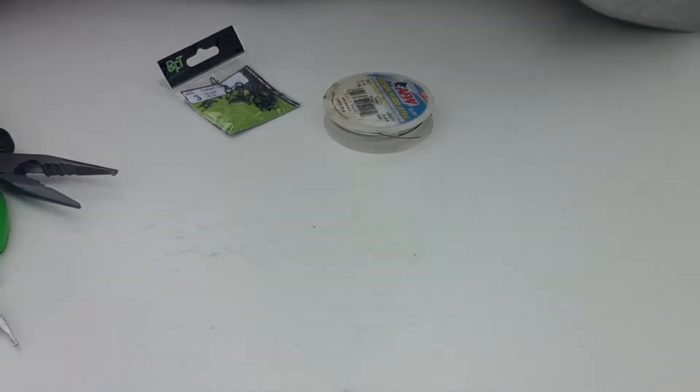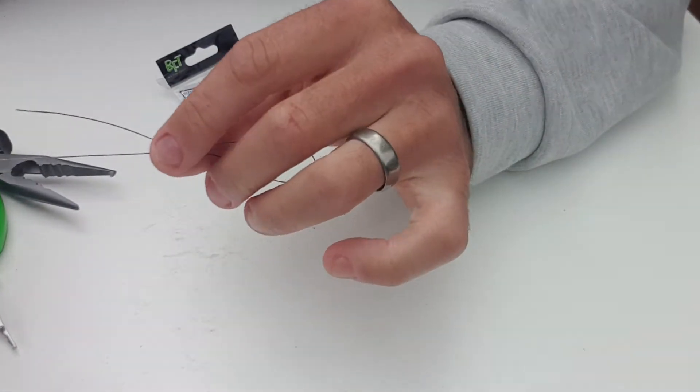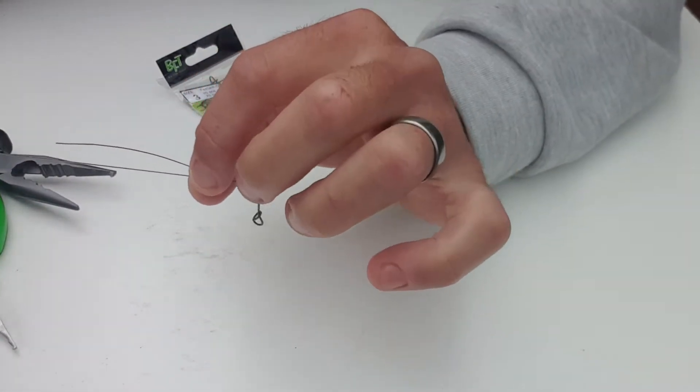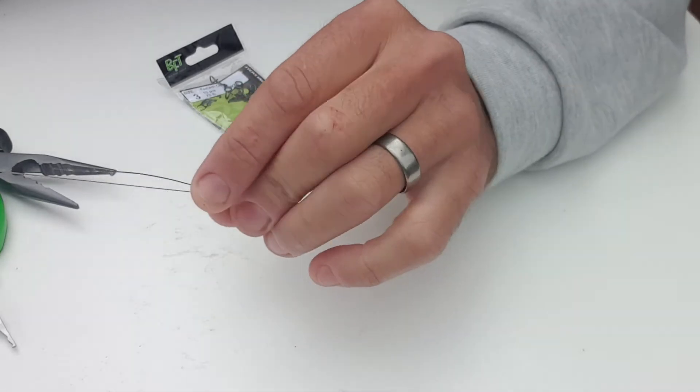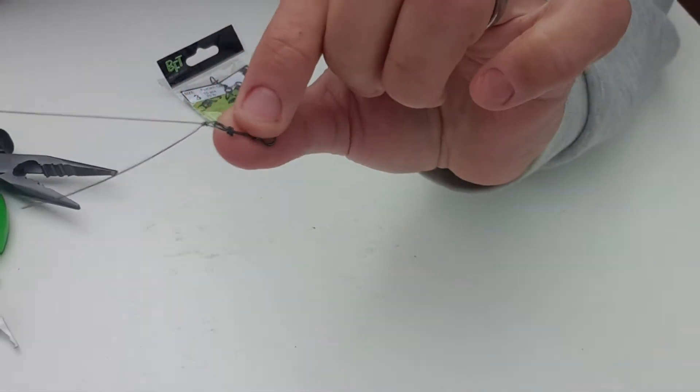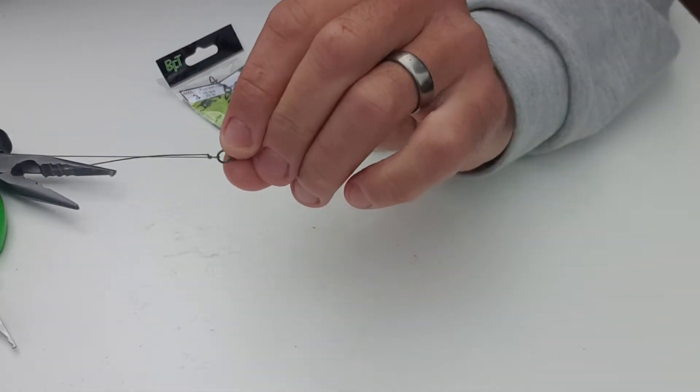So what I do is I wet it with a little bit of saliva or water and I'll just feed it down into place like that. That knot is not 100% cinched but it's quite tight, not too tight that it won't slide.